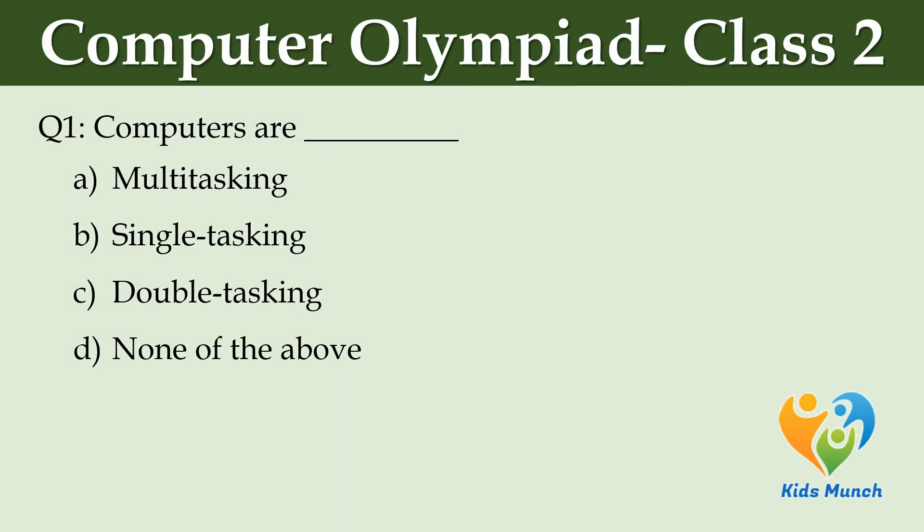Computers are dash. Option A: Multitasking. Option B: Single tasking. Option C: Double tasking. Option D: None of the above.